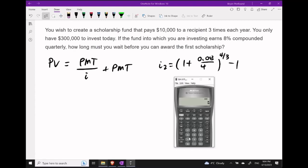Starting with our open bracket, let's program in 1 plus 8% compounded quarterly, then raise this to the power of 4 over 3, because we're making three equal-sized payments every year. Then close that bracket and subtract 1. I'm going to store this value under number 9.